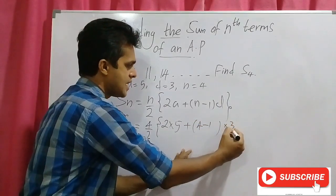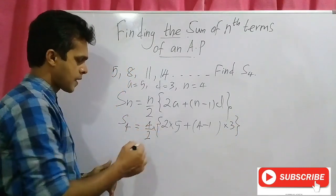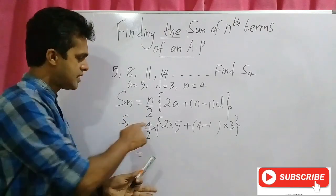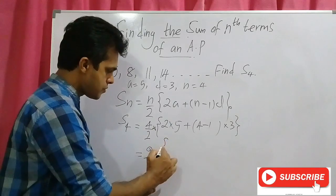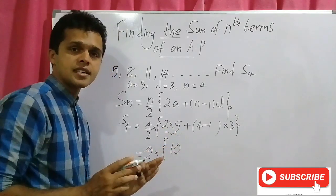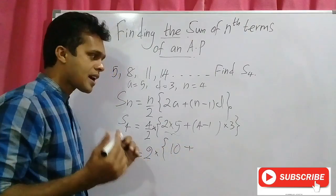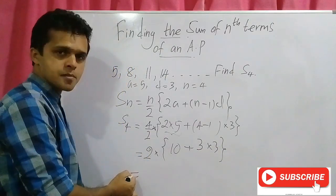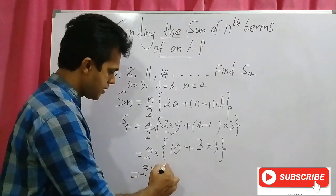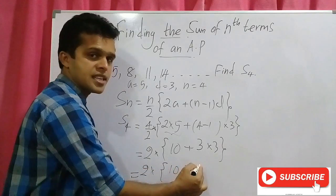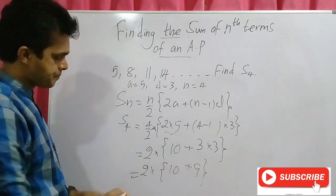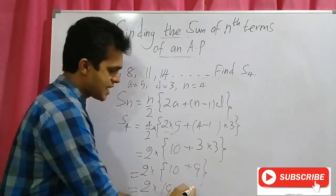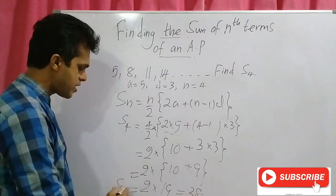Now let's simplify. 4 divided by 2 gives 2. Inside the bracket: 2 times 5 is 10, and 4 minus 1 is 3, times d which is 3, gives 9. So we have 2 times 10 plus 9, which is 2 times 19, equals 38. Therefore S4 equals 38.